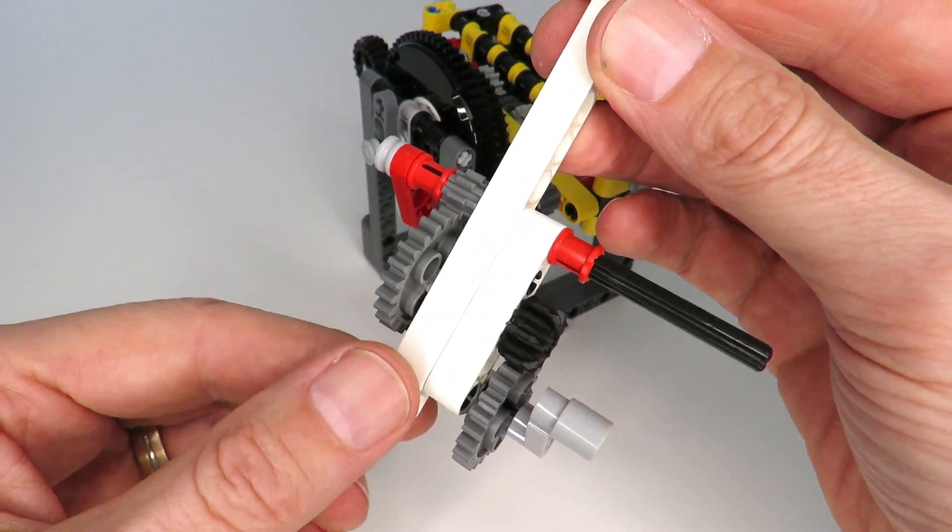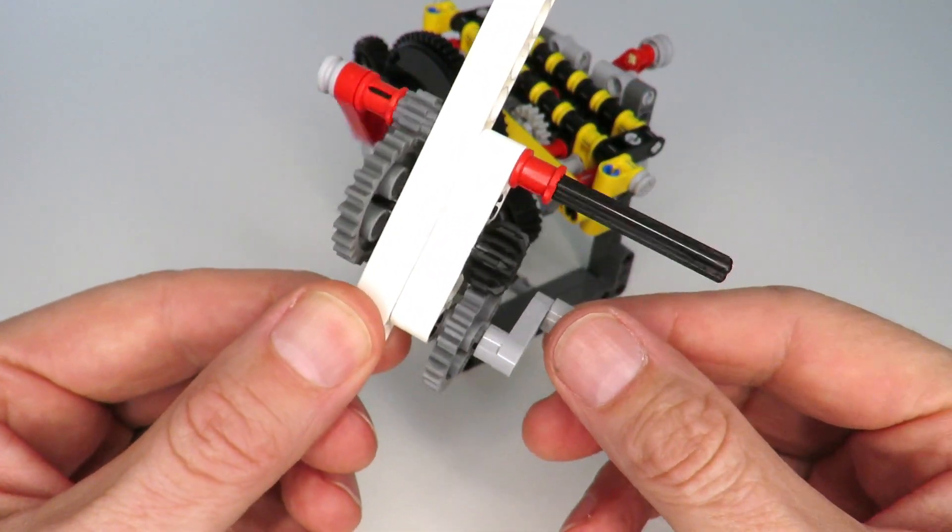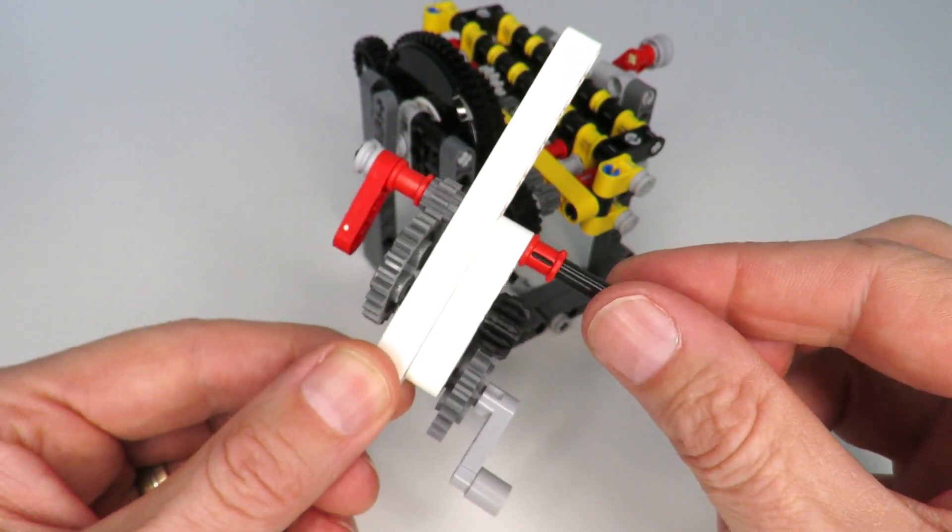I've created a 6-to-1 gear ratio by combining a 1-to-3 and a 2-to-1, creating a 6-to-1 between this input and this output here.